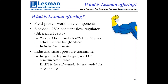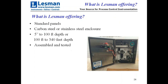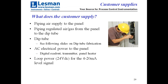The panels come in carbon steel or stainless steel. We have two ranges: 5 inches to 100 feet depth, or 100 feet to 340 feet depth. You need to supply pipe supply air or gas to the panel, pipe the regulated air from the panel out to the dip tube, fabricate a dip tube, and supply AC electrical power to the panel — which powers the digital readout and transmitter. If you want to take the signal back, supply loop power to get the 4-20 milliamp signal out.